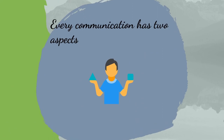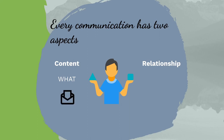Every communication has two aspects: a content aspect and a relationship aspect. The content aspect refers to what is being said — the information, the data of the message. The relationship aspect implies how the sender wants the receiver to understand the information, and is mostly delivered through tone of voice, word choice, facial expressions, and body language. Because a piece of information can be delivered in many ways, it is the relationship between sender and receiver — how they talk to each other — that is decisive for communication.